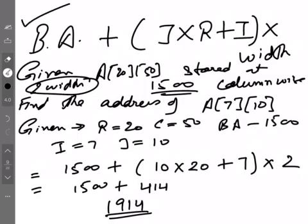Simple to calculate. You just need to remember this formula. In column-major versus row-major, the only difference is where I was, J comes, where J was, I comes, and where C was, R comes. Rest, the formula is the same. This is for column-major matrices.